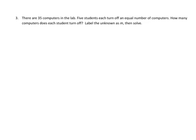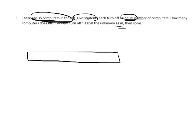On this one, it says: there are 35 computers in the lab. 5 students each turn off an equal number of computers — so that word 'equal' is going to be super important. How many computers does each student turn off? Label the unknown as M. Going back to read the question again: we have 35 computers in the lab — now that's the total. So I'm going to draw a bar that represents the total. There it is. There's our 35, and you can see this represents the whole.